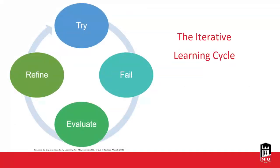The iterative learning cycle — trying, failing, evaluating what went wrong, and then refining your practice to try again — is something we've probably talked about before. Sharing that cycle with students and normalizing it can reassure them that this is okay, it's part of the process, and it's normal to not get everything right the first time. They might not have everything exactly correct by the end of the class, and that's okay.